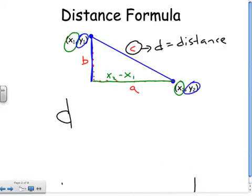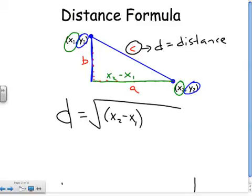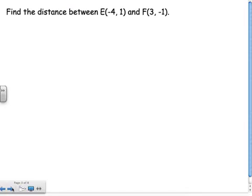So to find the distance, we take the square root of, subtract my x's, x2 minus x1, square it. And then we add that to subtracting my y's and then square it.